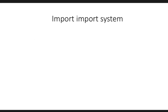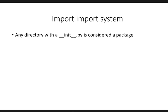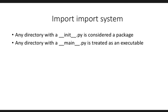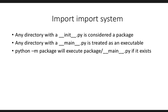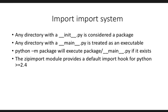Any directory with an __init__.py file is considered a package. Also, any directory with a __main__.py file is considered to be an executable — so python -m package will execute the main file in the package if it exists. Another interesting feature about Python's import system is zip imports: your packages don't just have to exist on the file system as they are. You can zip them up and Python will still identify them as valid packages, because there's a hook added to all Python distributions greater than Python 2.4 which allows you to do this.